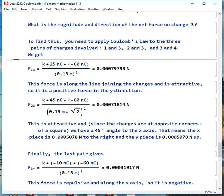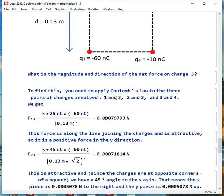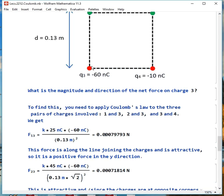What we get from this, 1 and 3, we have our k, 25 nanocoulombs, -60 nanocoulombs, square of the distance. We get 0.0007979 Newtons. This is along the line joining the charges, and it's attractive, so that makes it positive Y axis.